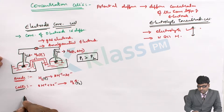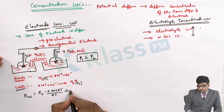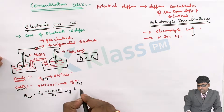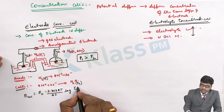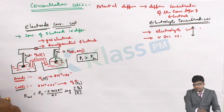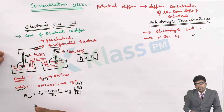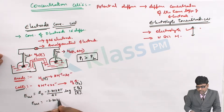Applying the Nernst equation: E(cell) = E° − (2.303RT / 2F) × log(P2/P1). Since the standard hydrogen electrode potential is 0, E(cell) = −(2.303RT / 2F) × log(P2/P1).